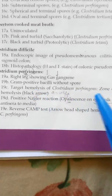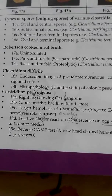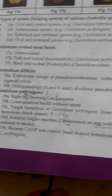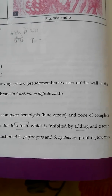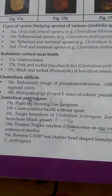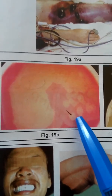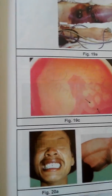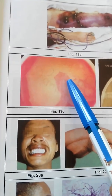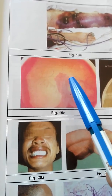19c is target hemolysis of Clostridium perfringens: the blue arrow indicates the zone of incomplete hemolysis, and the black arrow indicates the zone of complete hemolysis. You can see the black arrow for complete hemolysis and the blue area for incomplete hemolysis on the blood agar plate.